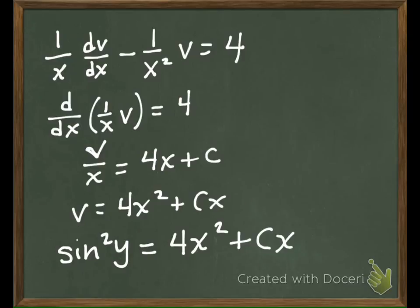You probably could get y by itself, but you'd end up taking the square root of both sides, which would give you a plus or minus on the right. And then you'd have to take the inverse. I think I would call this one solved.